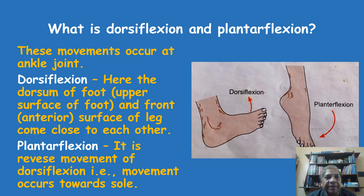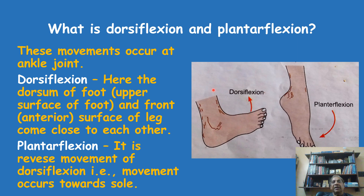Now let us look at dorsiflexion and plantar flexion, movements that occur at the ankle joint. As shown in the diagram, this is the dorsum of the foot — the dorsal surface — and this is the anterior surface of the leg. When the dorsum of the foot, which faces upward towards the roof when standing in anatomical position, is brought close to the anterior surface of the leg, this movement is called dorsiflexion.